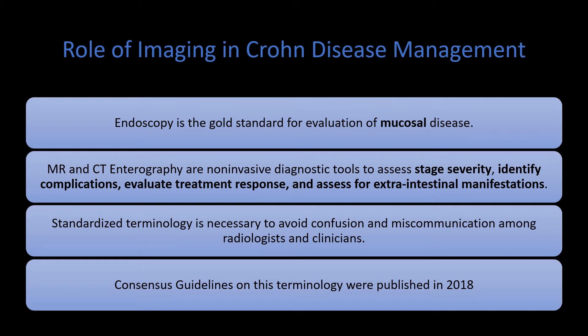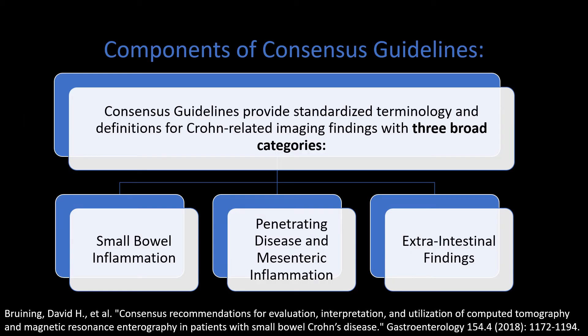Because of this, there were consensus guidelines published in 2018 that really tried to bring together a community of radiologists, gastroenterologists, and surgeons to standardize that terminology. The consensus guidelines are organized into three basic categories: small bowel inflammation, penetrating disease and mesenteric inflammation, and extra-intestinal findings. You can find that paper by lead author David Bruning in Gastroenterology from 2018 — it is an excellent overview and well worth reading if you are doing imaging for Crohn disease.